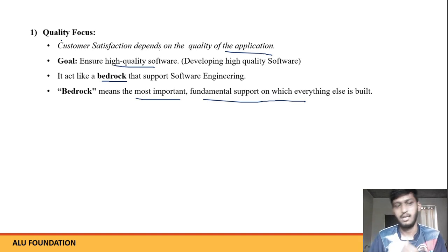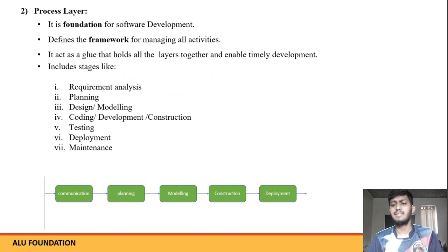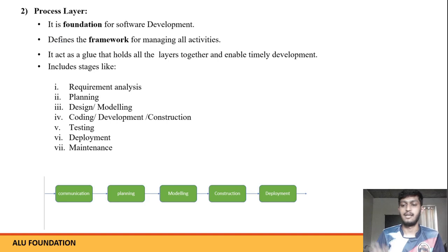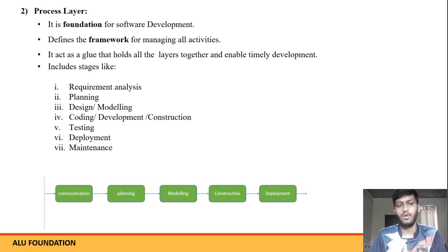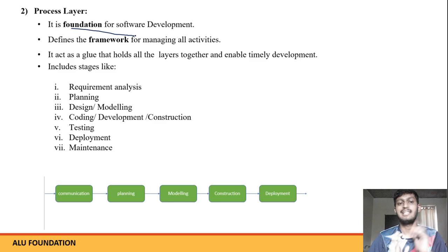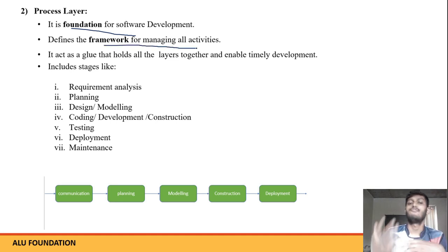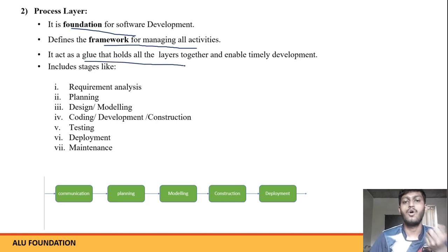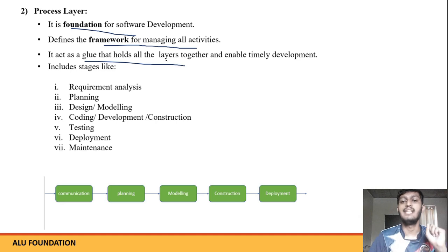The process layer: it is the foundation for software development. It defines the framework for managing all activities. It acts like glue that holds all layers together and enables timely development — meaning it provides a timeline specifying what should be completed in each phase.